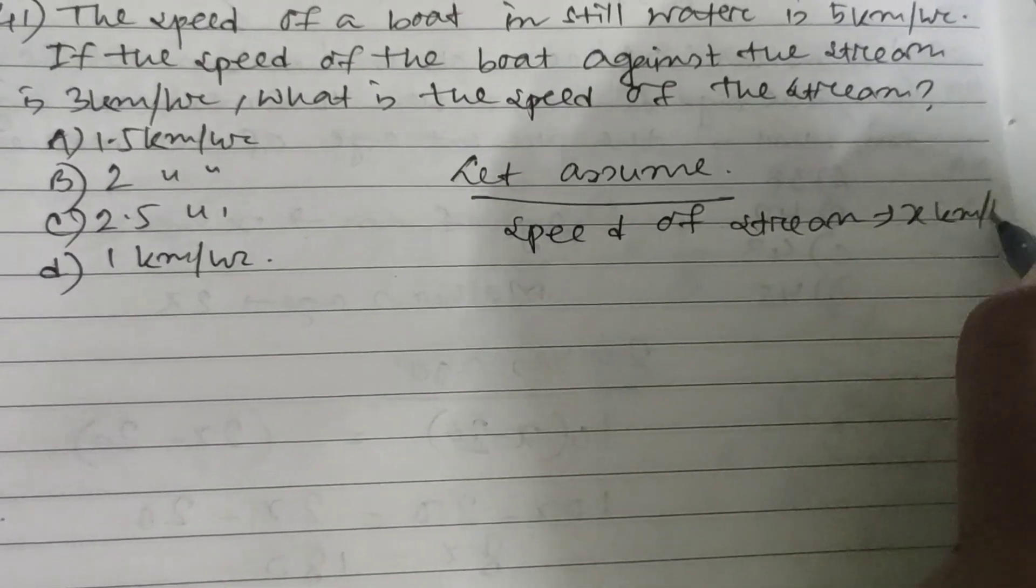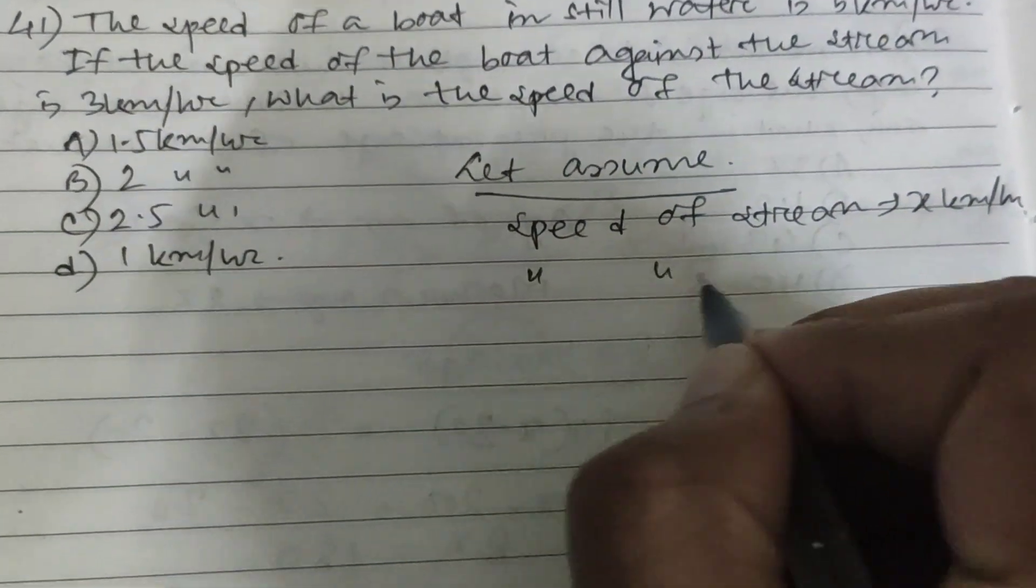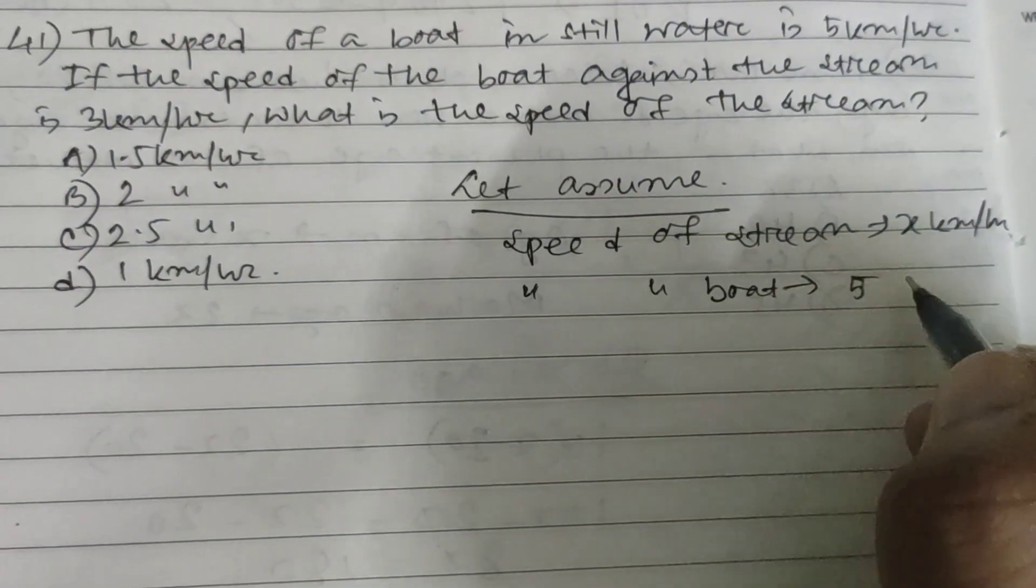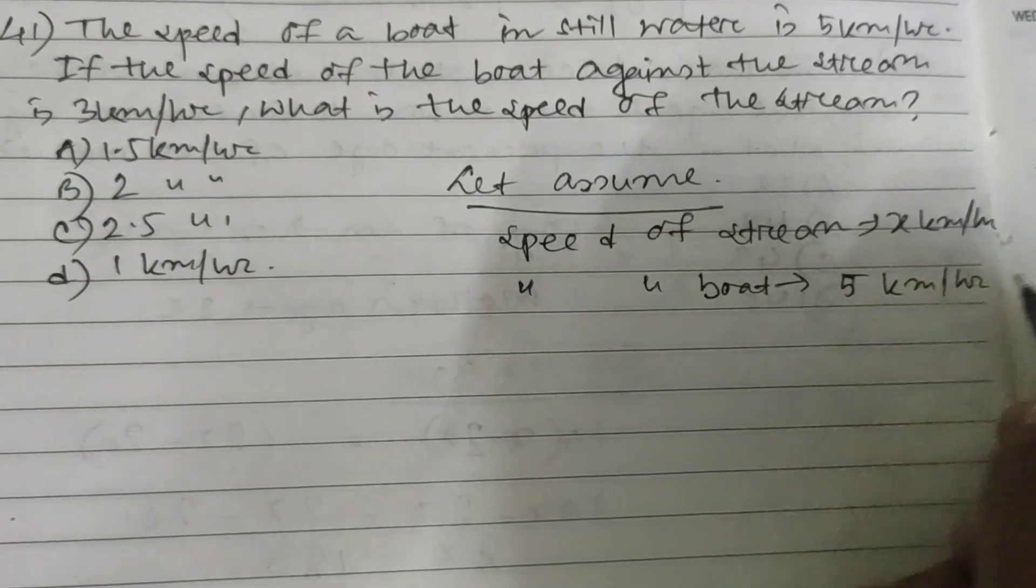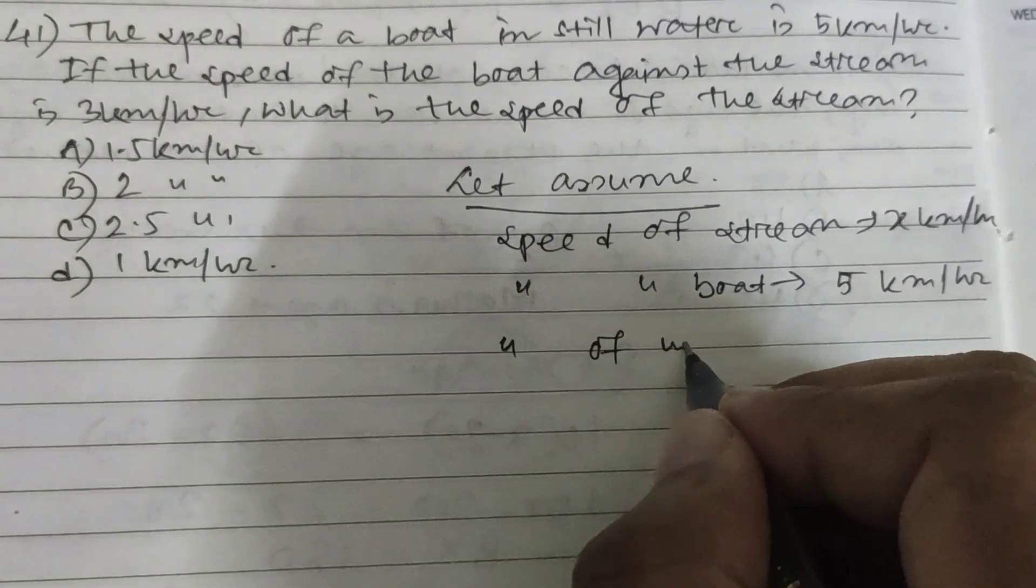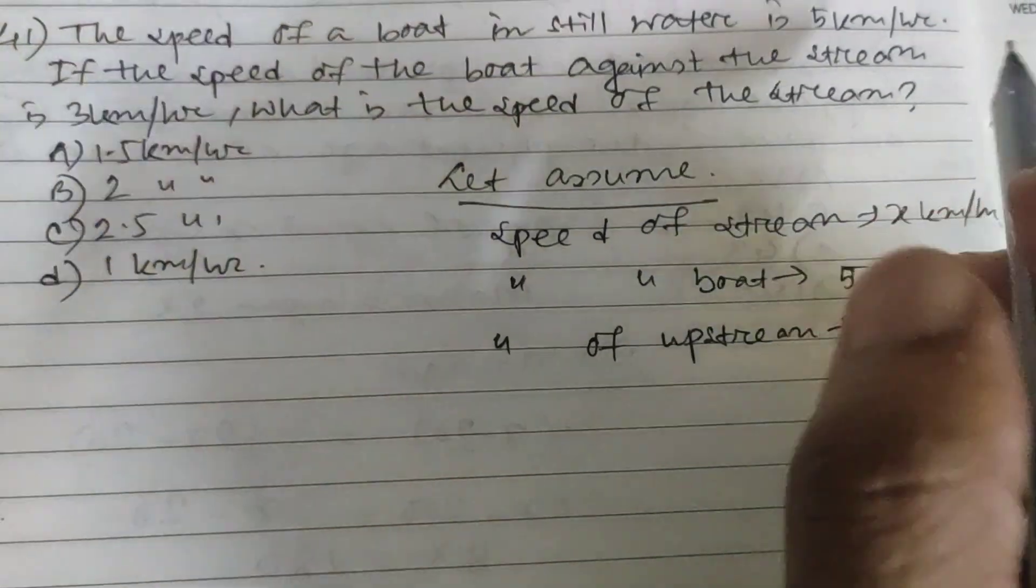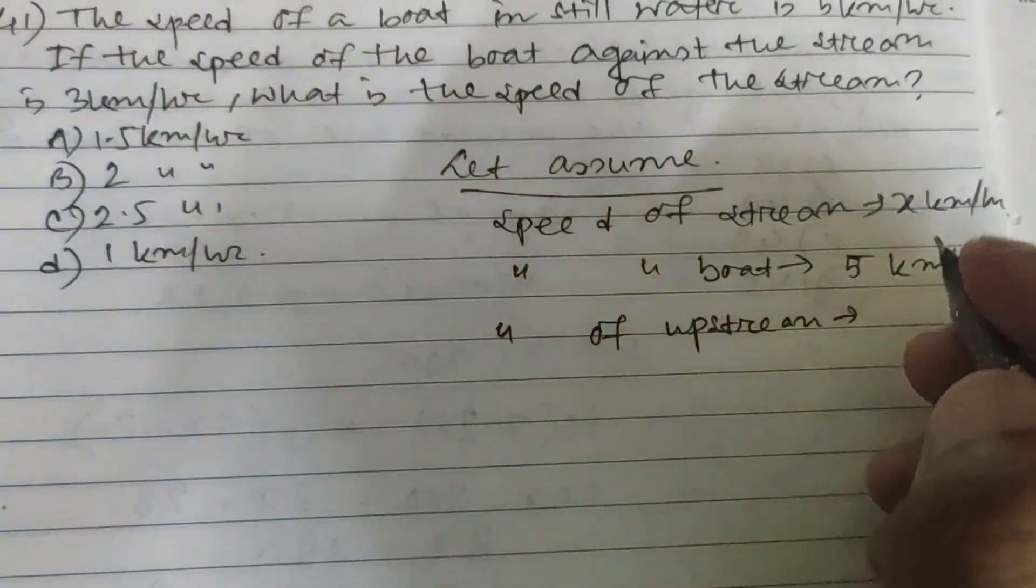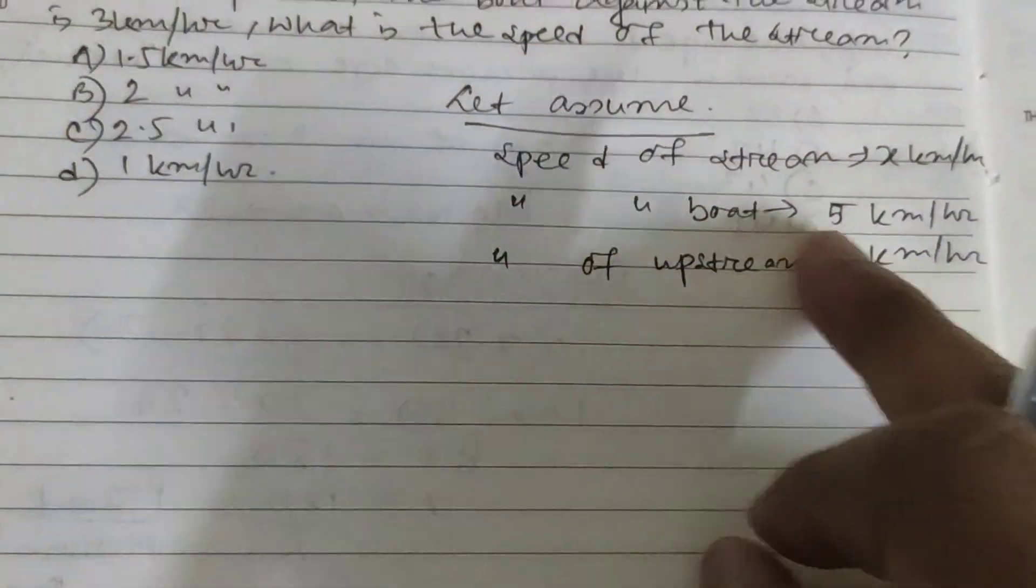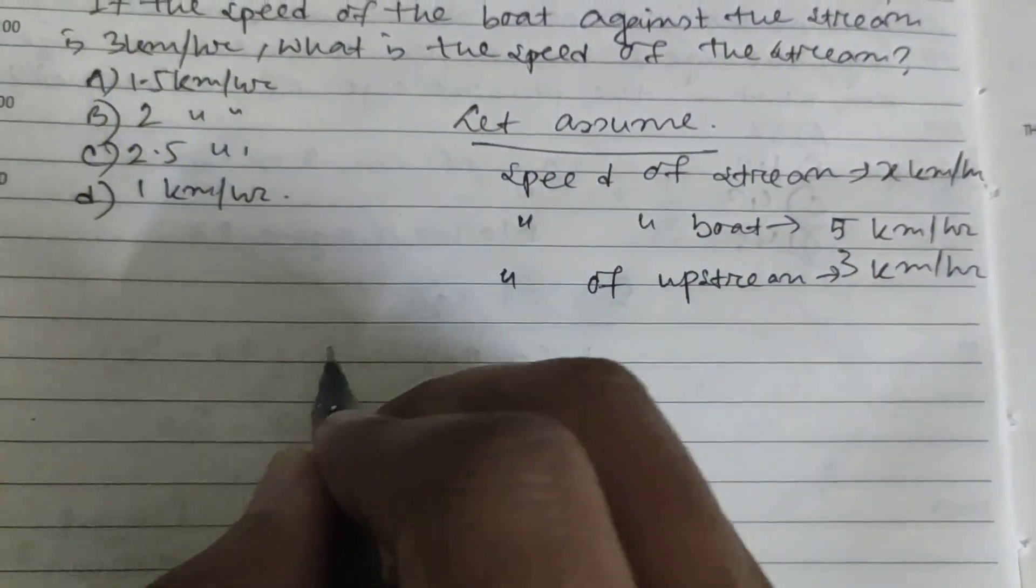Let's assume speed of stream is x kilometer per hour. Speed of boat is given as 5 kilometer per hour, and speed of upstream is given as 3 kilometer per hour.